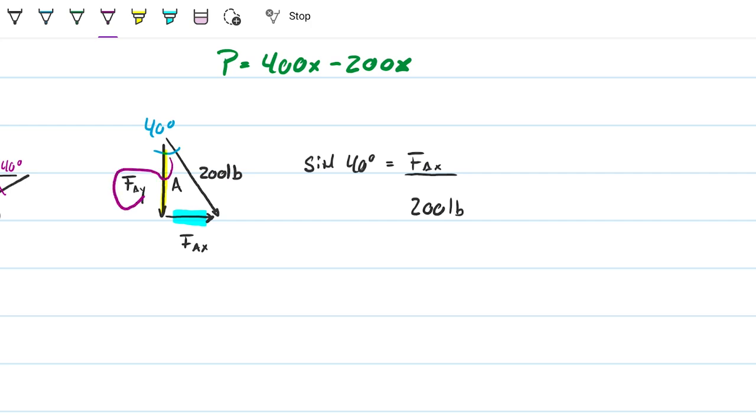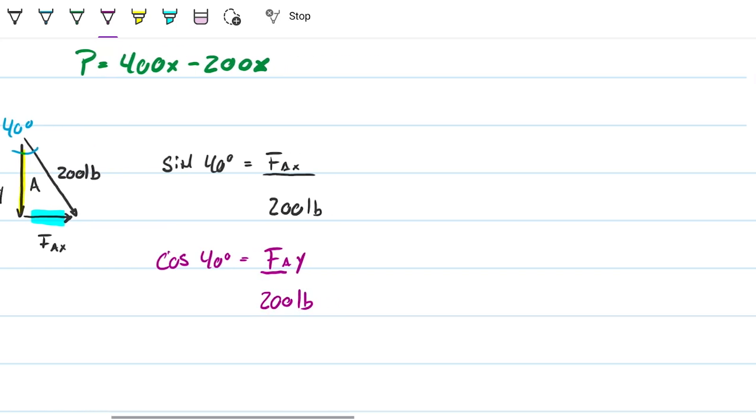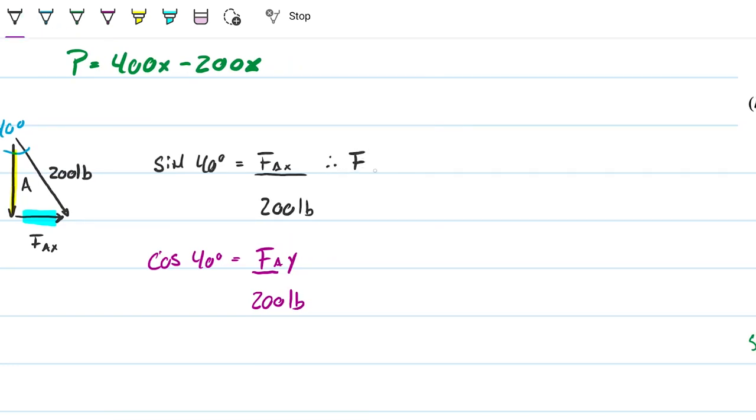And the cosine is going to be adjacent over the hypotenuse, so this guy here, which means that my cosine of 40 degrees will be my force A on the y direction divided by the same 200 on the hypotenuse, and once again, my only unknown is force. So this means that my force AX, the force that I have here, will be 128.56 pounds, obviously the same unit, I'm just multiplying by a ratio which is my sine of 40, and here on the cosine I have 153.21 pounds.